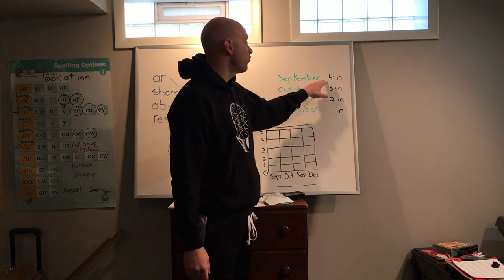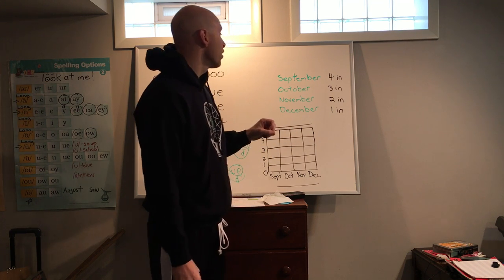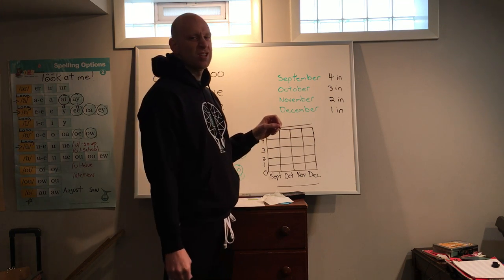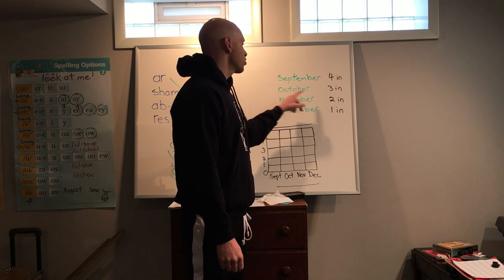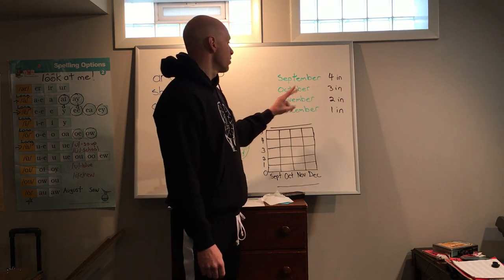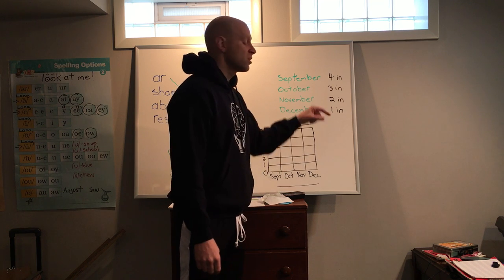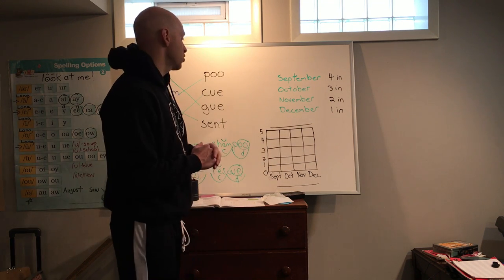So September, we got four inches of rainfall. Not really. This is just make-believe. October, three inches. November, two inches. December, received one inch.